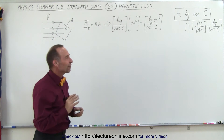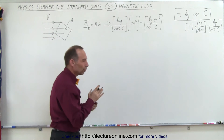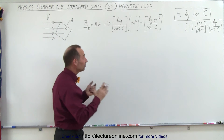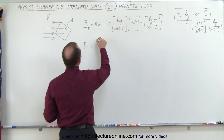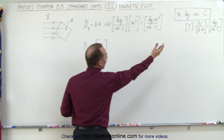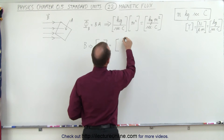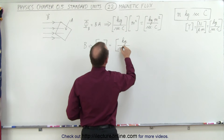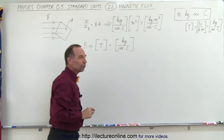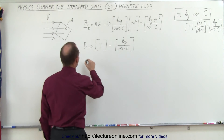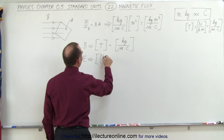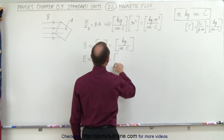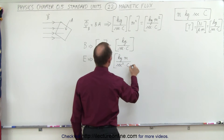Now let's talk about something very interesting. We're going to relate the units for the magnetic field to the units of the electric field to see what happens. The units for the magnetic field can be written as kilograms divided by seconds times coulombs. The electric field can be defined as newtons per coulomb, which expands to kilograms times meters per second squared times coulombs.